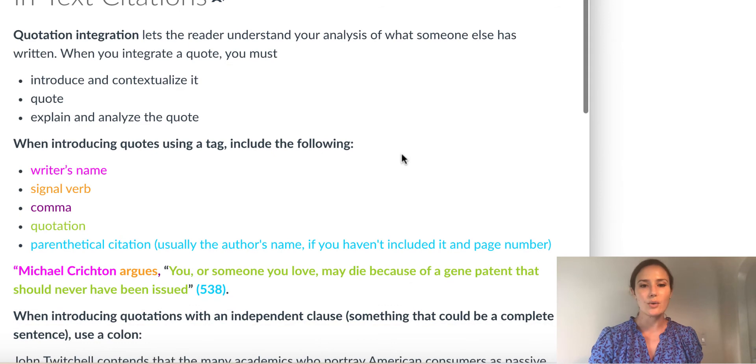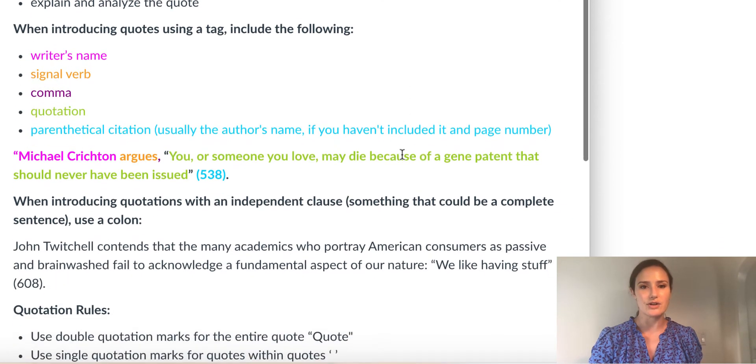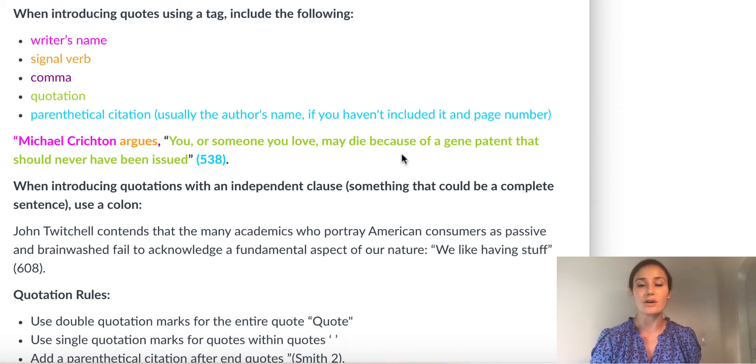When you're introducing the quote, you can use a couple different strategies. You can introduce the quote with what's called a tag. That's something like John Smith writes, followed by a comma. So you include the writer's name. If you don't want to include the writer's name, you can include the writer's last name in your parenthetical citation. But if it's the first time you're referencing the writer, it's good to include the first name and the last name when you introduce the quote.